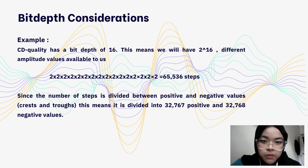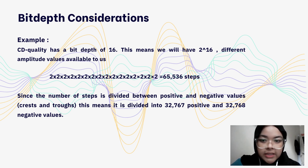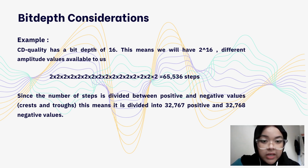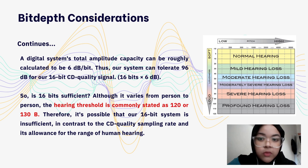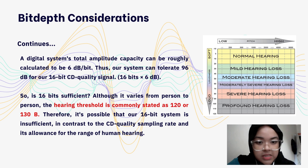For example, CD quality has a bit depth of 16, meaning we have 2 to the power of 16 different amplitude values available, which equals 65,536 steps. Since the number of steps is divided into positive and negative values, we have 32,767 positive steps and 32,768 negative steps. A digital system's total amplitude capacity can be roughly calculated as 6 decibels per bit, so our system can tolerate 96 decibels for a 16-bit CD quality signal (16 bits × 6 dB).